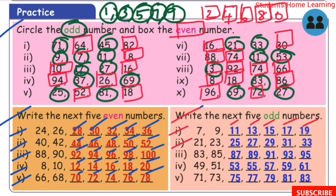Second set starting from 21, 23 — the odd numbers are 25, 27, 29, 31, 33. Third set starting from 83, 85 — the odd numbers are 87, 89, 91, 93, 95. Fourth set starting from 49, 51 — the odd numbers are 53, 55, 57, 59, 61. Fifth set starting from 71, 73 — the odd numbers are 75, 77, 79, 81, 83.